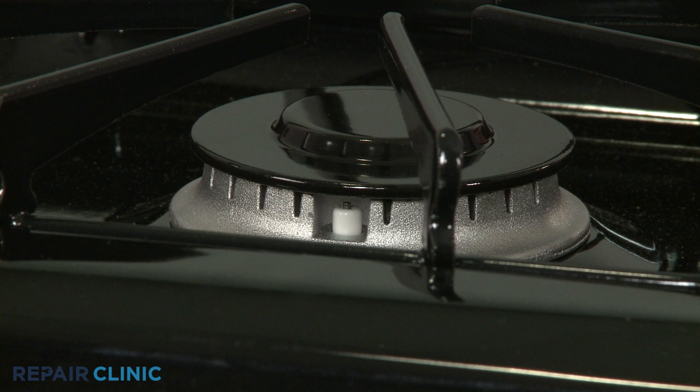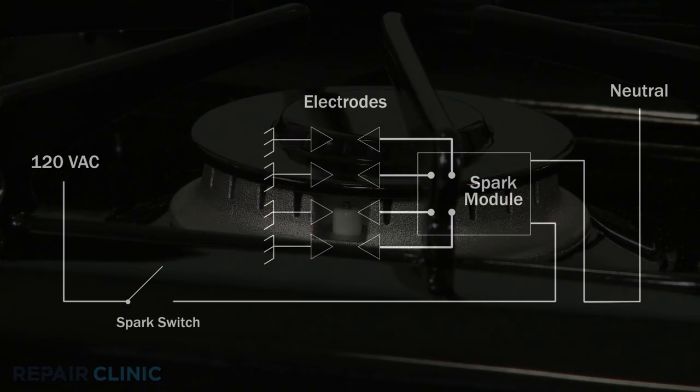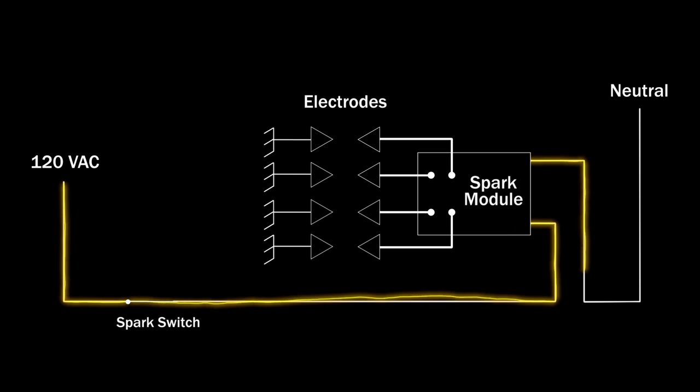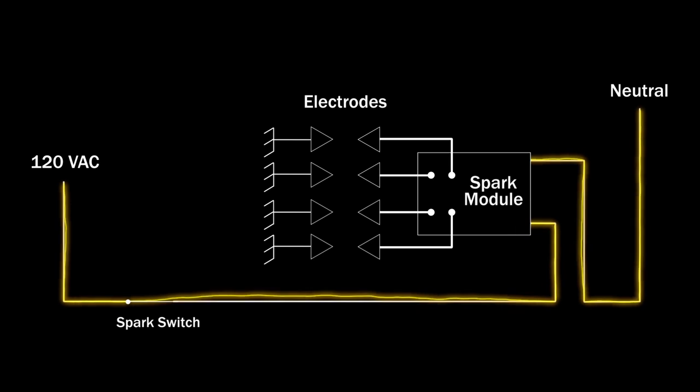If one or more of the electrodes fails to spark at all, the cause could be a defective switch that prevents the voltage from reaching the module. The module could also be defective and fail to produce the high voltage pulses to one or more of the electrodes.